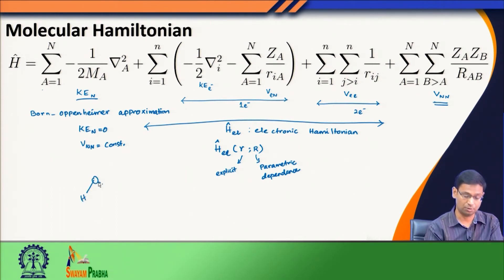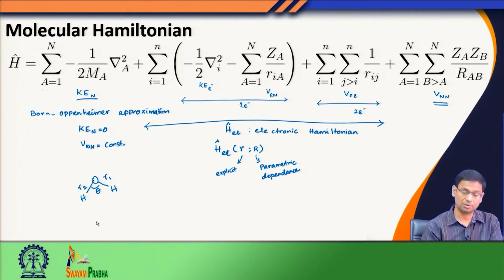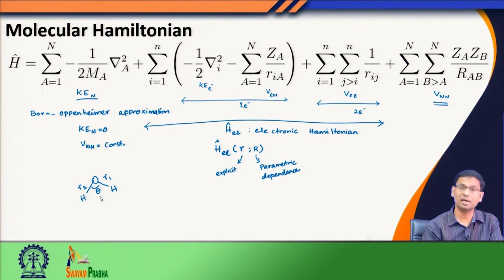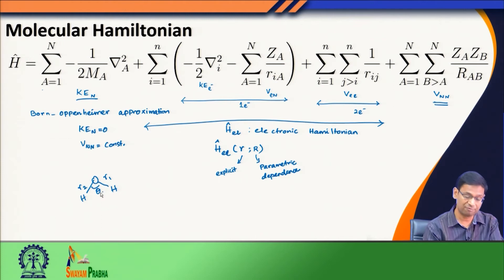For example, consider a simple molecule — water. We have some distance R₁, I call it R₂, and I call this angle theta, where all coordinates I am able to change. For a given configuration with values of R₁, R₂, theta, the nuclei are frozen and fixed in their place. You would see that the kinetic energy of the nuclei becomes 0 because I have frozen them, and the nuclear-nuclear repulsion, since it simply depends on the charges of the nuclei and their relative distance, becomes a constant since I have frozen these nuclei. So we can simply add them later.